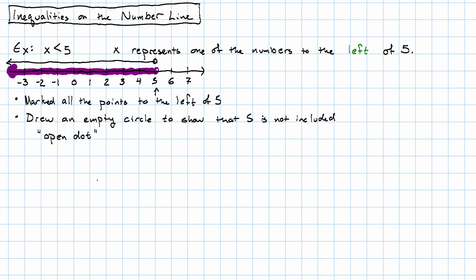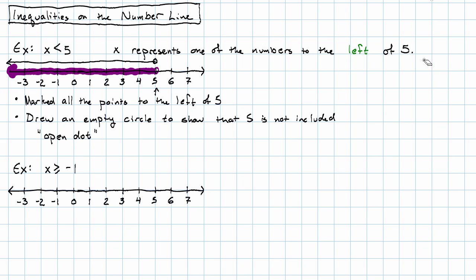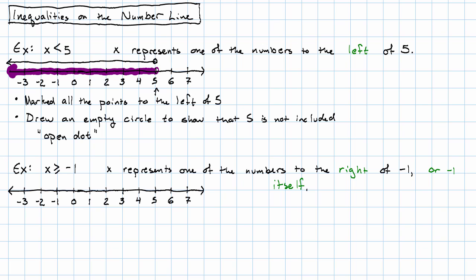Let's see one more example. Let's say we have x is greater than or equal to negative 1. If it's less than, that means x is to the left of 5. If it's greater than, that means x is to the right of negative 1. That greater than or equal to means x represents one of the numbers to the right of negative 1, or negative 1 itself. So to the right of negative 1, we're going to mark an arrow going off to the right.